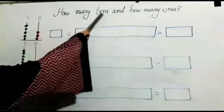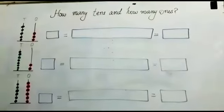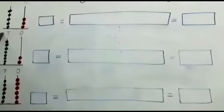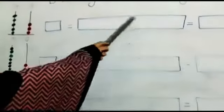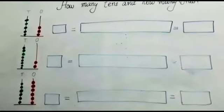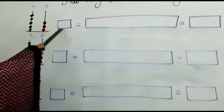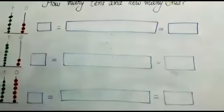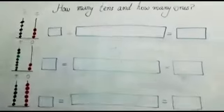How many tens and how many ones? So students, our question is, locate the workers, then fill in the empty boxes. So students, first we have to count the beads and write in the box. Then write the digits with their place values.